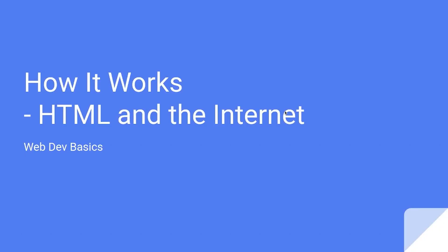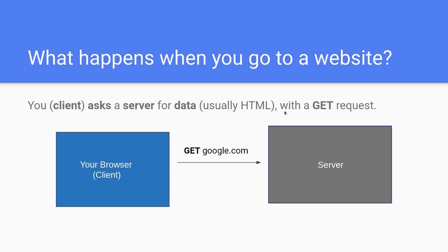How does HTML and the internet work? What happens when you go to a website? The client asks a web server for data. It usually asks for HTML when you're using a browser, and it sends a GET request. So here is your browser, also called the client. We send a GET request to google.com to the server. The server says OK, and then it sends it back, and the browser renders this HTML into content.